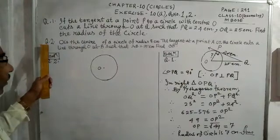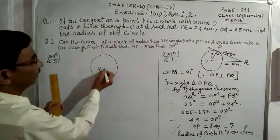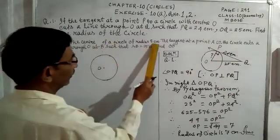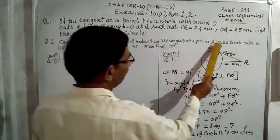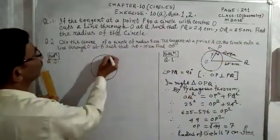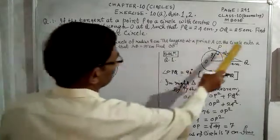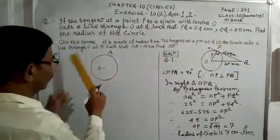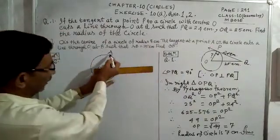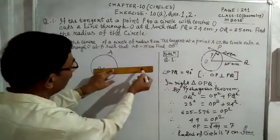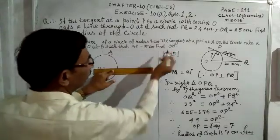Now let us do question number 2. O is the center of a circle of radius 8 centimeters. The tangent at a point A on the circle cuts a line through O at point B, such that AB equals 15. We need to find OB.